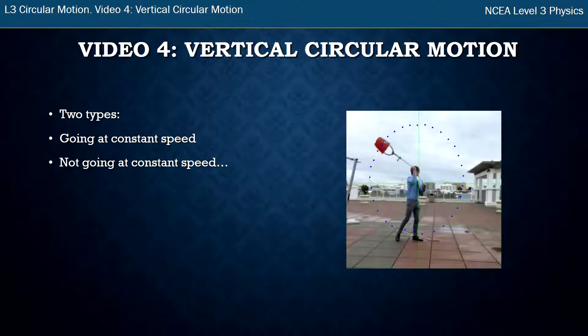Now there's two types of vertical circles. There's ones where the object's going at a constant speed and others where it's not going at a constant speed. Its speed slows down as it gets to the top and speeds up as it gets to the bottom. So this video, video 4, is going to be on things going at a constant speed and then I'll do another video, video 5, with objects not going at a constant speed.